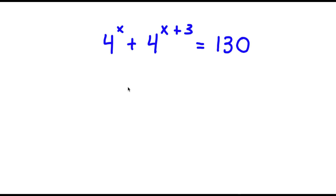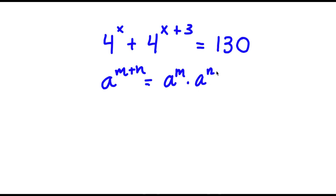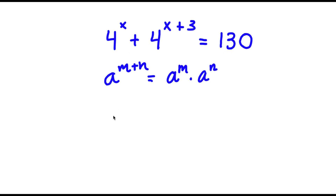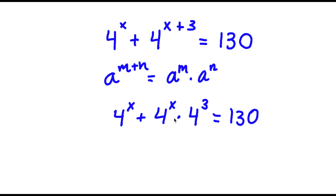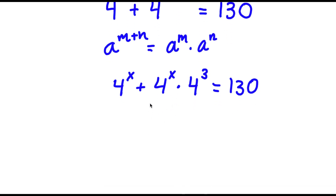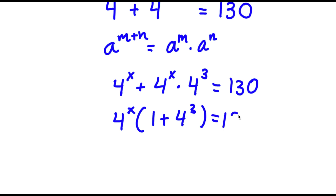So in this problem, I have 4 to the power of x plus 4 to the power of x plus 3, is equal to 130. To start, if I have something in the form a to the power of m plus n, this is equal to a to the power of m times a to the power of n. So 4 to the power of x plus 3 equals 4 to the power of x times 4 to the power of 3. Now I'm going to factor out 4 to the power of x, so I get 4 to the power of x times 1 plus 4 to the power of 3 is equal to 130.